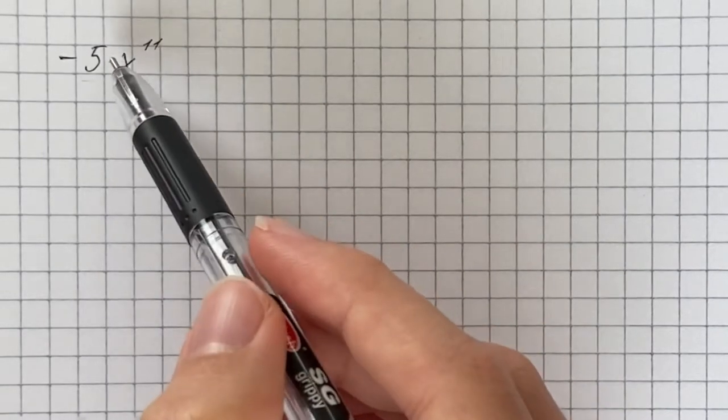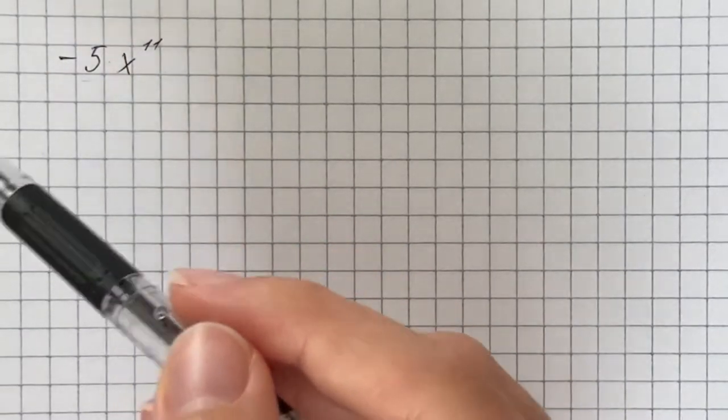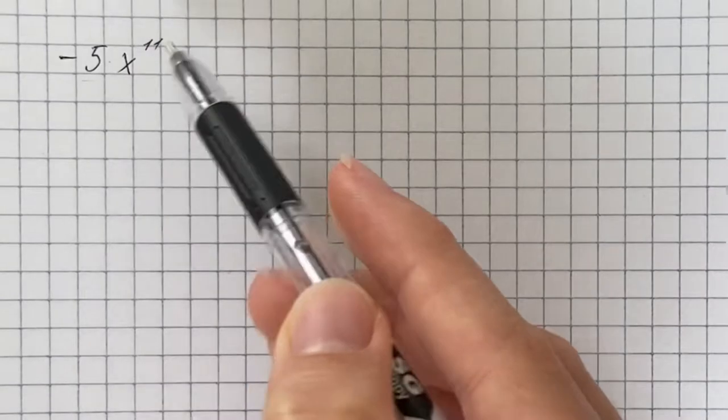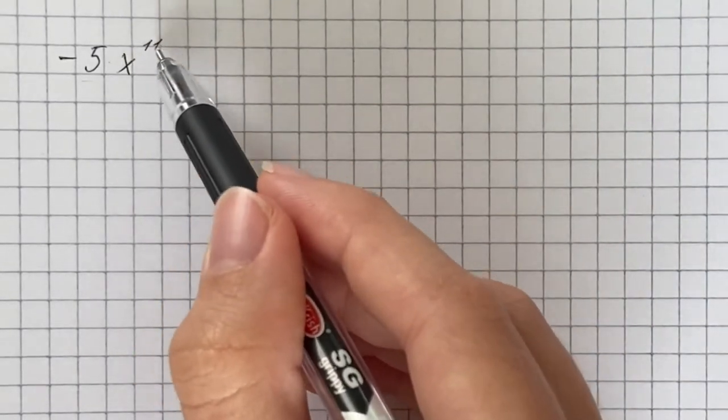The highest exponent of the variable of the expression is called the degree of the polynomial. In our case, it's going to be 11.